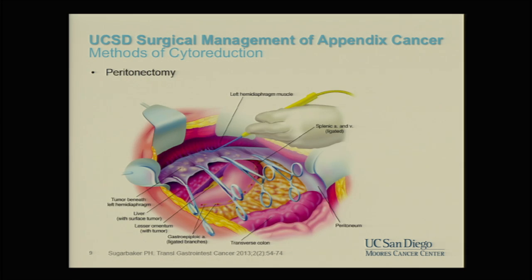This includes resecting individual tumor nodules, stripping sheets of peritoneum, and sometimes formal visceral resection if organs are directly invaded. Limiting factors include bowel involvement, disease around the porta hepatis — the region around the liver where blood flow enters — and extensive pelvic involvement. We can remove the peritoneum as a big sheet rather than taking off each tumor nodule individually. This is illustrated by surgical photos showing tumor stripped from the diaphragm, leaving the muscle intact but removing the peritoneal lining.